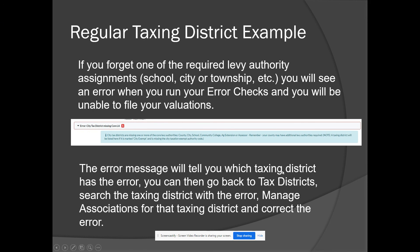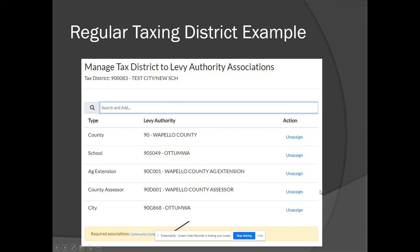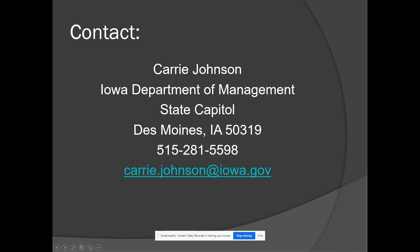The error message will indicate which taxing district has the error. You can go back to tax districts, search for that tax district, select 'manage associations,' and assign the missing levy authority. For example, if you forgot the community college, search for the applicable community college and use the plus button to assign it. If you have any questions about working with tax districts in the online system, please call or email. Thank you.